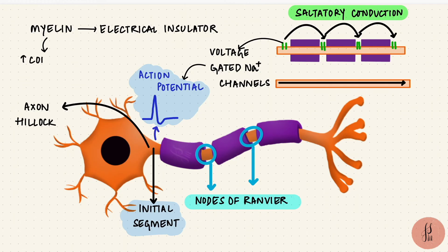So myelinated nerves conduct impulses faster, and those impulses are action potentials.